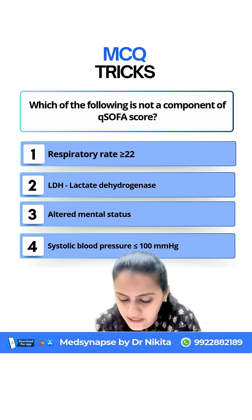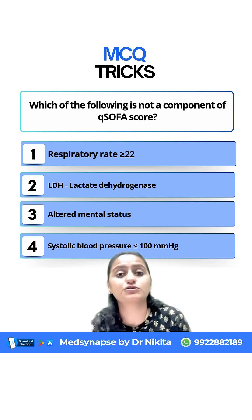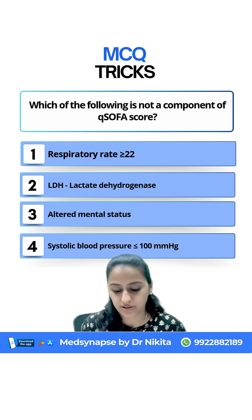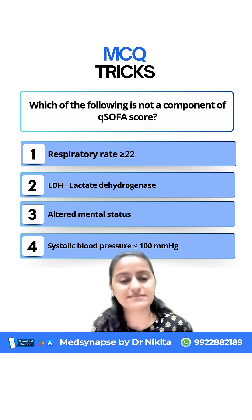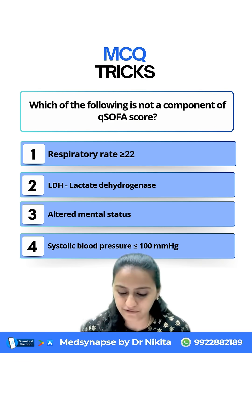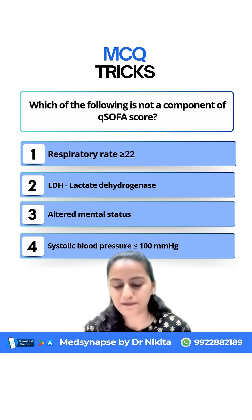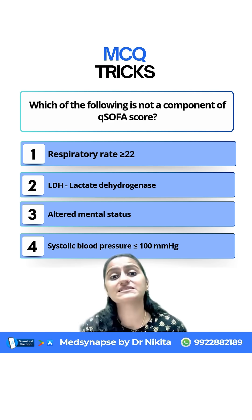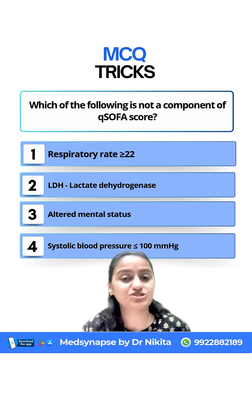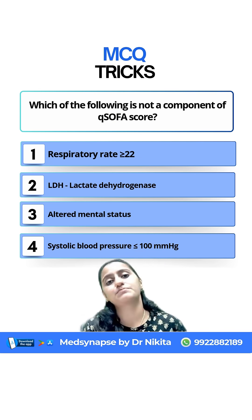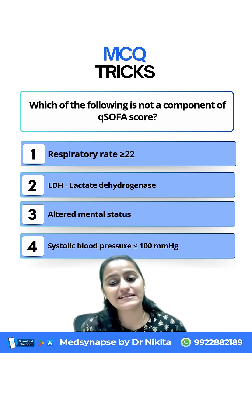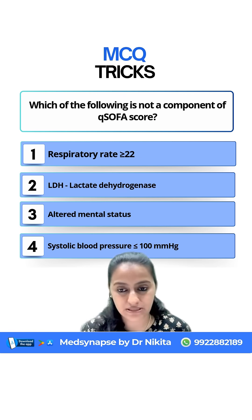Remember that the qSOFA score components are similar to the Revised Trauma Score, and the mnemonic to remember is RTS. R stands for Respiratory Rate, T — in trauma patients we first look at the score, we look at GCS, and S stands for Systolic Blood Pressure.